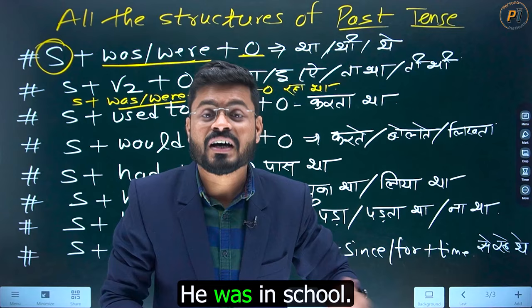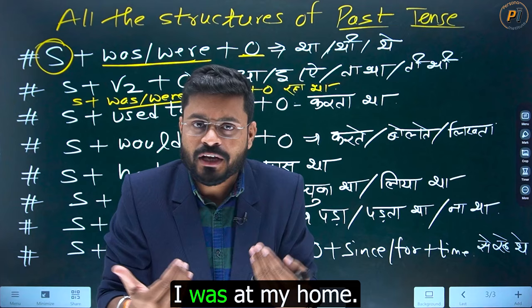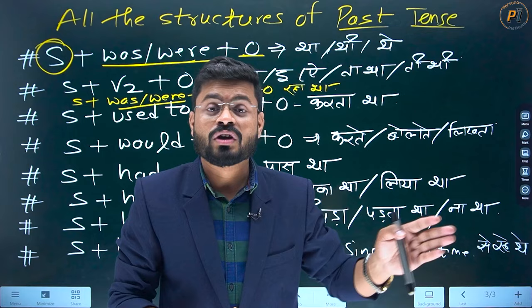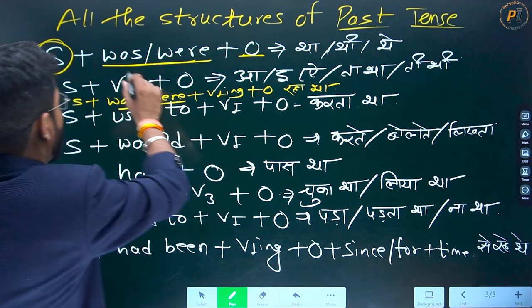Aap kahaan the? Toh aapne kaha — I was at my home, main apne ghar par tha. I was with my family — main apni family ke saath tha. Aapne kaha: do saal pehle woh kya tha? Toh aapne kaha: do saal pehle woh ek doctor tha — he was a doctor two years ago. Toh is tariqe se, aap jab sentences banayenge aur bolenge, toh isse aapki practice hogi. Aap balance kar paoge.